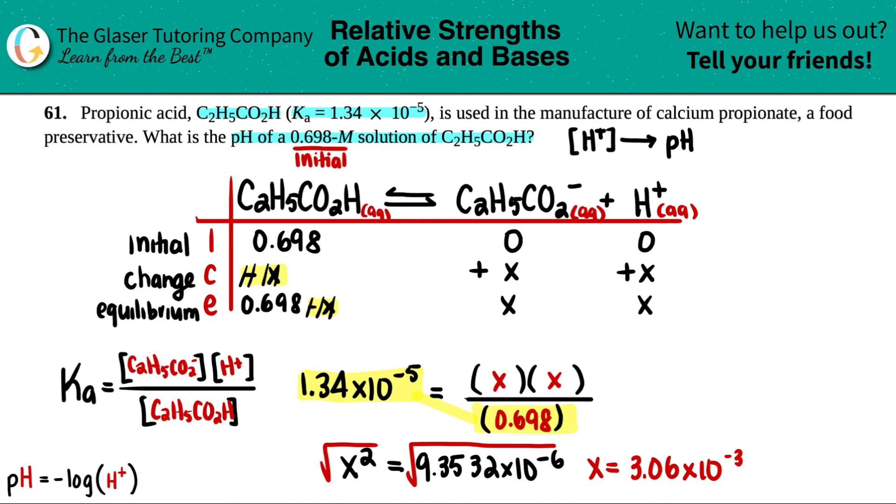Now remember, the name of the game was to find the pH. And we said if we want to find the pH, we got to find the H plus concentration. And here is what the H plus was at equilibrium—it was just X, and that's what we found. So we just found that the H plus concentration is 3.06 times 10 to the negative third, and that's molarity because we use the ICE table.